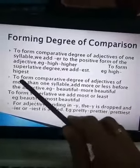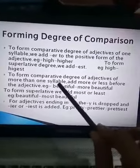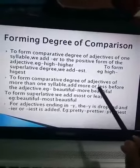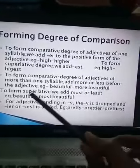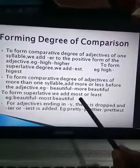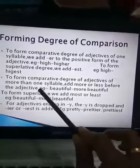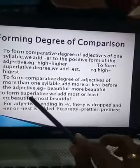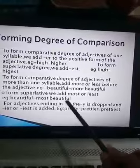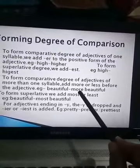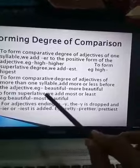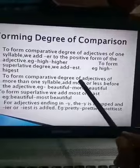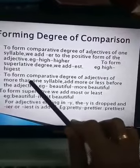But if the adjective contains more than one syllable, then to form comparative degree we add 'more' or 'less,' and to form superlative degree we add 'most' or 'least.'